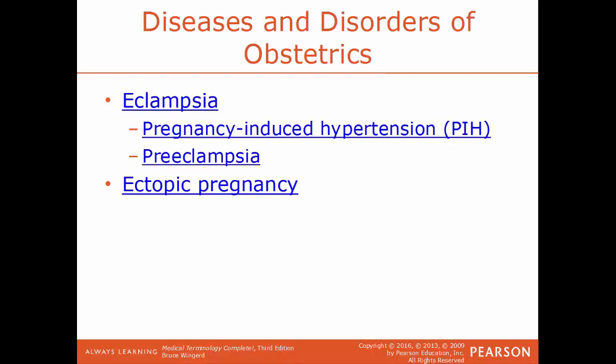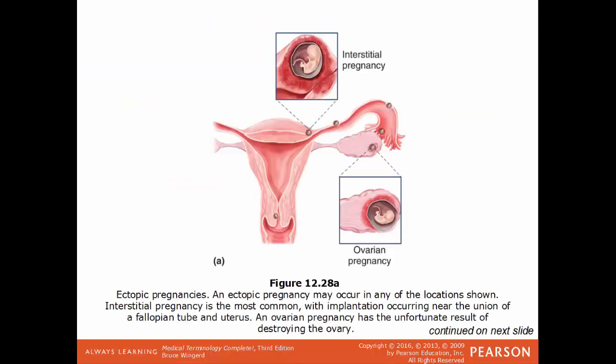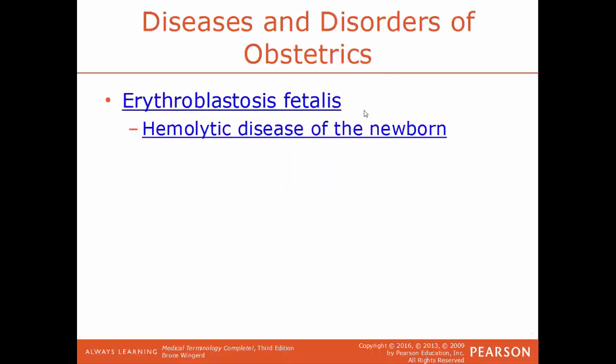Ectopic pregnancy is a type of pregnancy where the fetus develops outside of the uterus — usually happens in the fallopian tube. In this illustration, we have examples of ectopic pregnancies. If the fetus develops in the ovary, that would be an ovarian pregnancy. If it occurs in the interstitial space, that would be an interstitial pregnancy. But the great majority of all ectopic pregnancies occur within the fallopian tube.